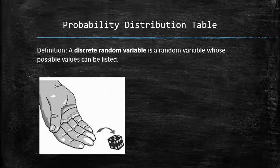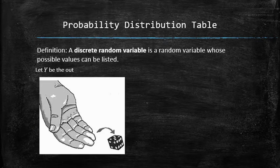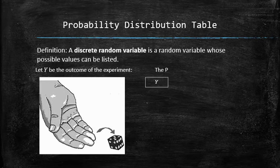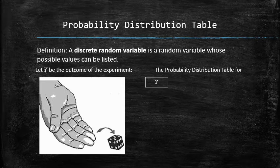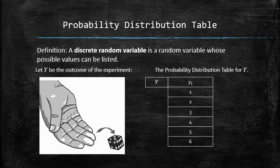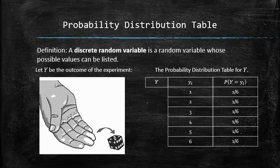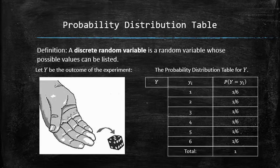Consider rolling a die and let y be the outcome of the experiment. We construct the probability distribution table for y by listing all possible outcomes and their probabilities side by side in the form of a table. Again, note that the sum of all probabilities must equal 1.